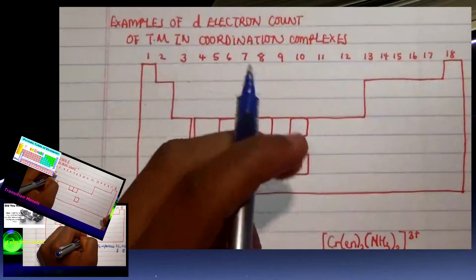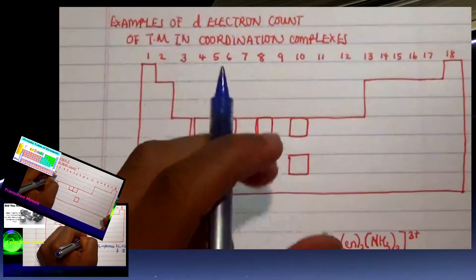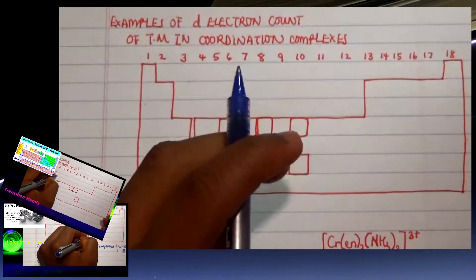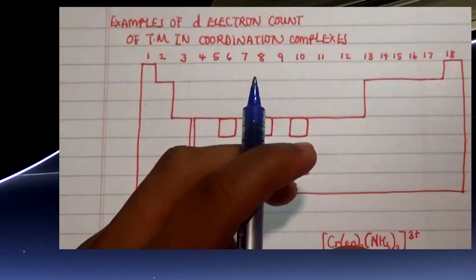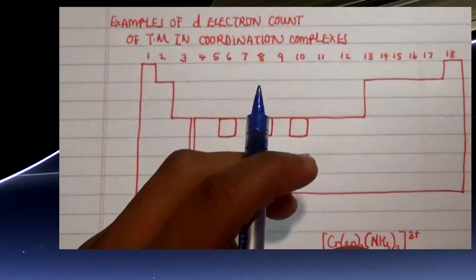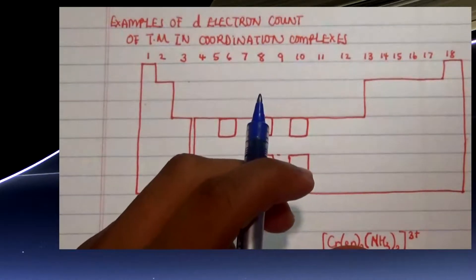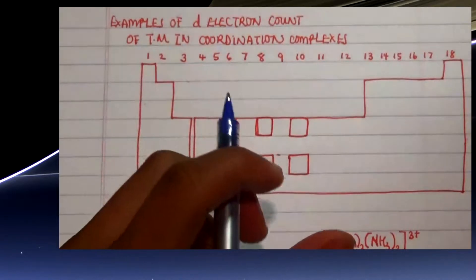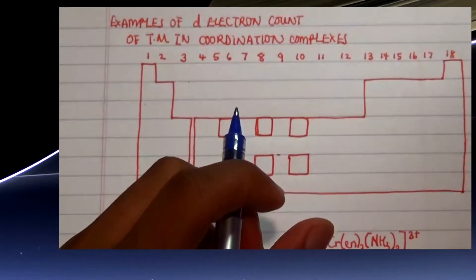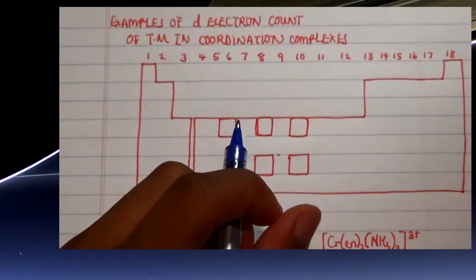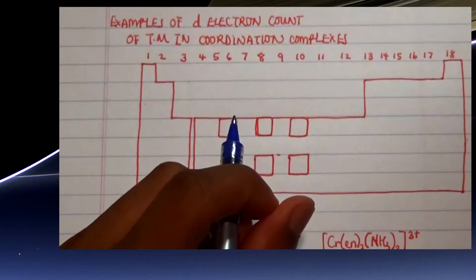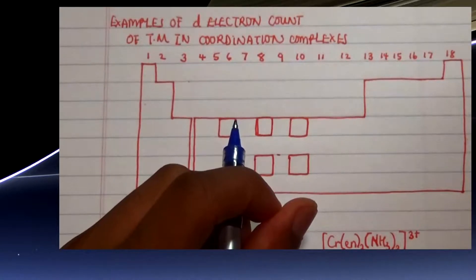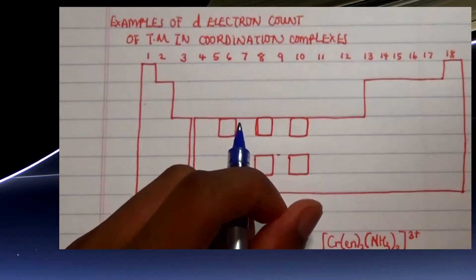We talked about oxidation states and how you can convert them into the electron count. I gave you some examples in our previous video, but here I'm going to show you more examples and touch a little bit on how they relate to geometry or shapes.